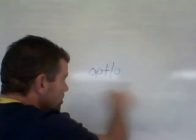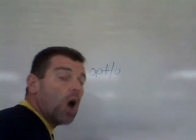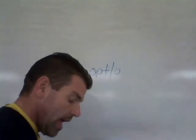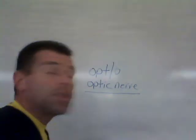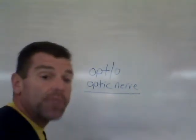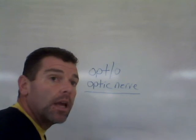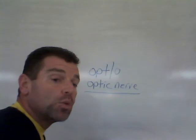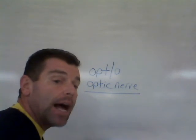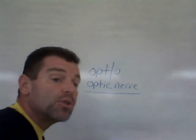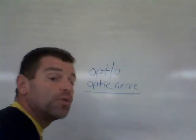'Opto' also means eye. So we have oculo, ophthalmo, and opto — all meaning eye. The optic nerve is the nerve pertaining to the eye that allows us to pick up visual data that our brain interprets. Optic means pertaining to the eye.